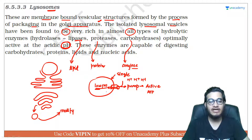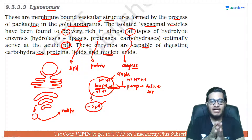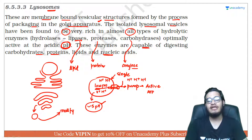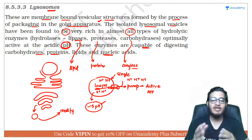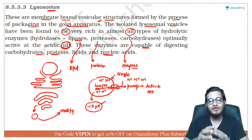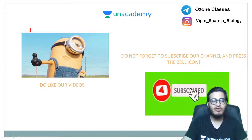ATP का use करते हुए cytoplasm से protons को lysosome के अंदर pump किया जाता है, और यह digestion में help करते हैं। So these enzymes are capable of digesting carbohydrate, protein, lipid, and nucleic acid। अगर कभी lysosome burst हो जाए, या फिर basically अगर इसके सारे enzymes बाहर निकल जाएं, तो वो enzymes inactivate हो जाते हैं।